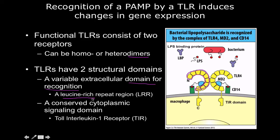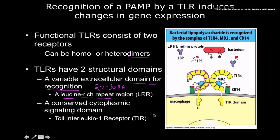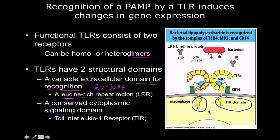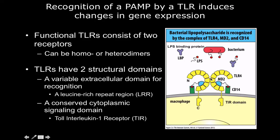This is the leucine-rich repeat region, which is interesting because leucine is a hydrophobic amino acid. It's anywhere from 20 to 30 amino acids long. The internal side, which I'll show in blue, is the conserved region — the signaling domain. All toll-like receptors have the exact same, or very similar, signaling domain. We call this the toll-interleukin-1 receptor domain. So the signaling domain doesn't change, but the extracellular recognition domain does, which makes sense because toll-like receptors all do the same thing but bind different ligands.